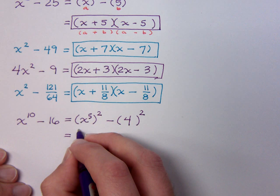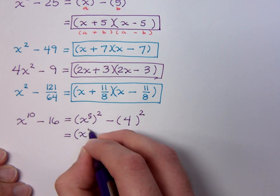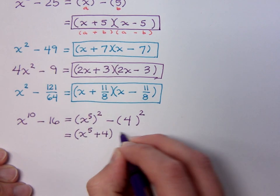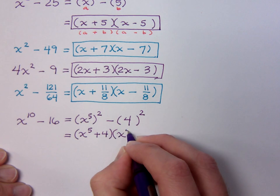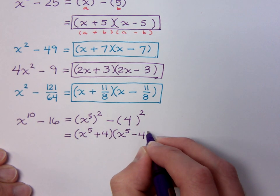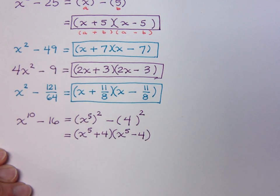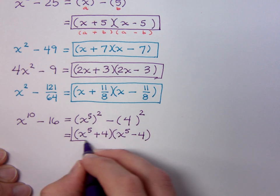So you see that he's going to factor as x^5 + 4 and x^5 - 4. Just what we would expect.